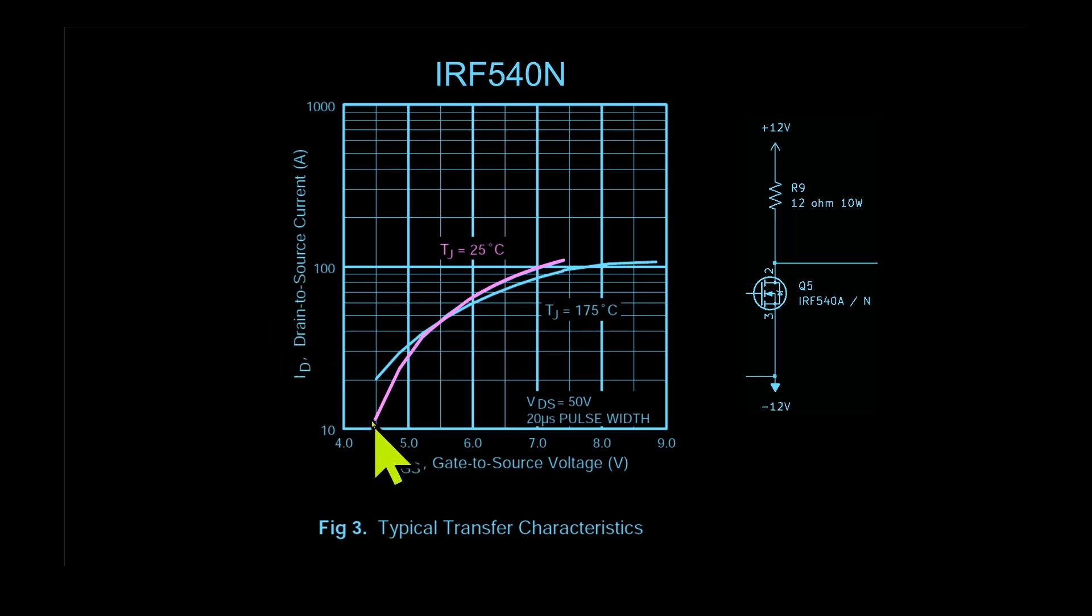And below the threshold voltage here, we don't have any current that flows through the drain, so we have to reach almost this point and then increase the voltage so that the current that flows through the drain and through this resistor causes this resistor to have a voltage drop that equates half the power supply voltage.